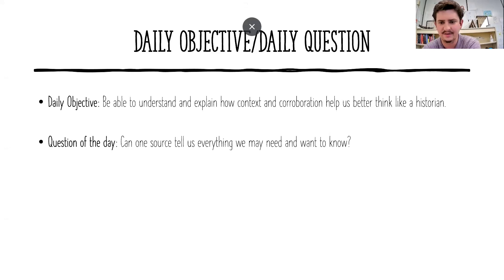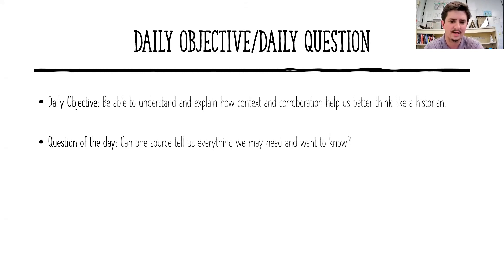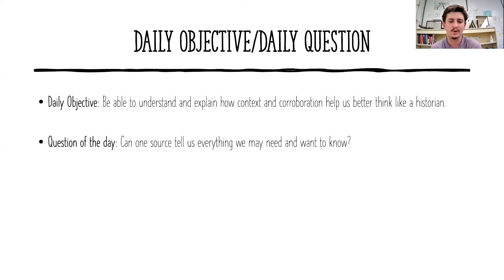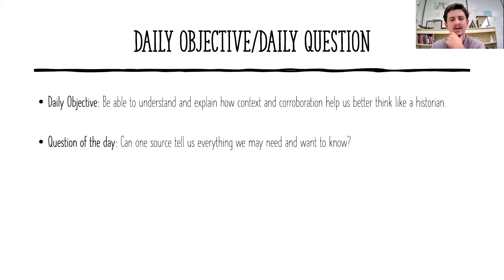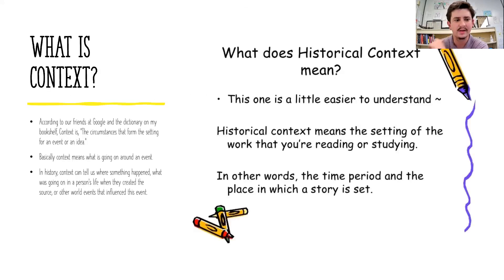As always, here is our daily objective and question of the day. The objective is that by the end of this you'll be able to understand and explain how context and corroboration can help us think like a historian. The question of the day, which you should have already seen in the module, is: can one source tell us everything we need to know about whatever topic we're studying? Be sure you answer that question in the discussion on the module, and then we will get started with context.